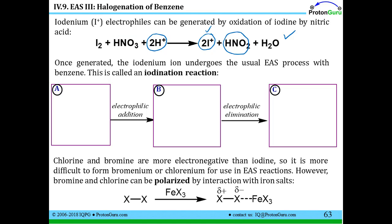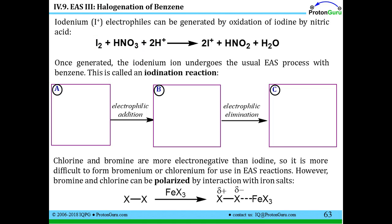In terms of reaction conditions, you would have I2 and nitric acid present. You won't see people drawing out the two H+ because when nitric acid is in solution you already have protons from that strong acid. So the conditions are written as I2 and HNO3. When you see those, you know I2 reacts with HNO3 to generate I+.